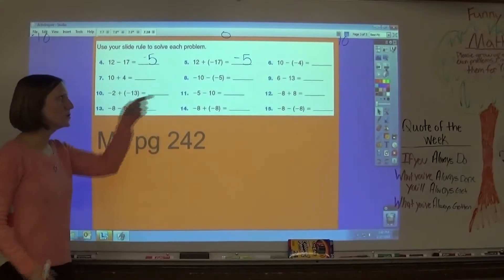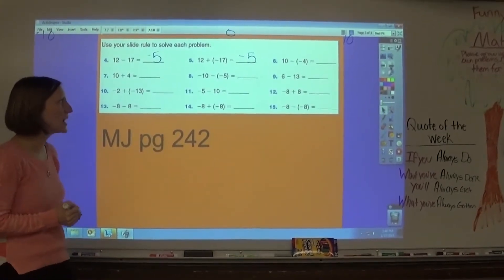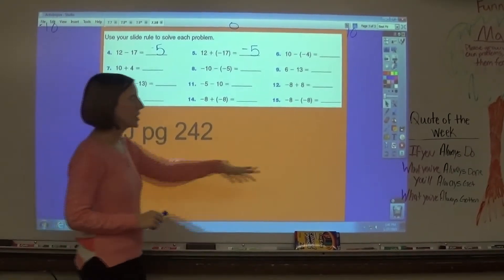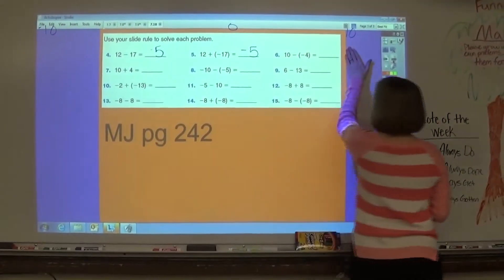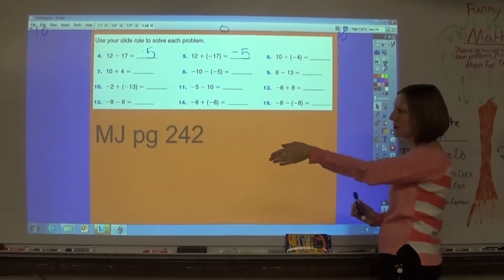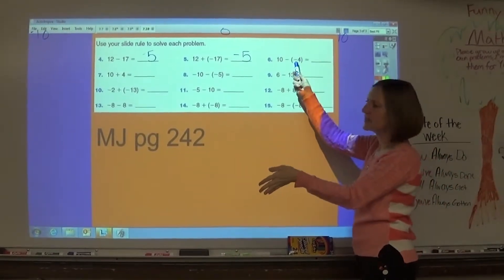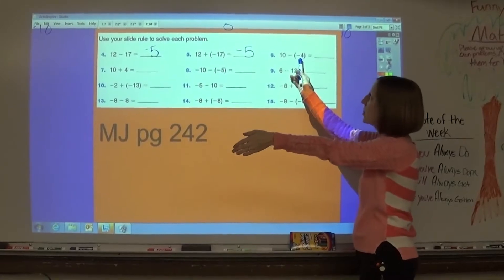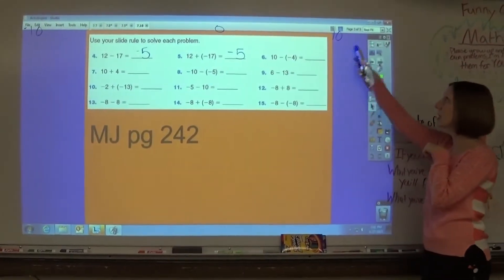Let's do one more. We'll do number 6, because sometimes subtracting those negative numbers seems a little tricky. I will start at positive 10, subtracting, so I face smaller numbers, but I'm subtracting a negative 4. So even though I'm subtracting, I'm walking backwards 4 steps.